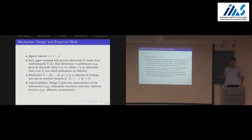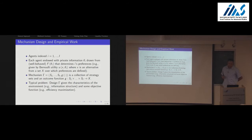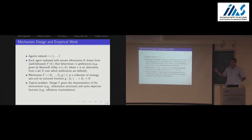Just to set up notation: the mechanism involves an incomplete information world where agent i is endowed with private information theta, drawn from some well-behaved CDF of theta. We have preferences given by some Bernoulli utility function over alternatives X given type theta_i. The mechanism specifies a bunch of strategy sets and a function mapping strategy sets into alternatives. Typically in mechanism design you think about how to come up with gamma given the characteristics of the environment — the information structure — and given some objective function.